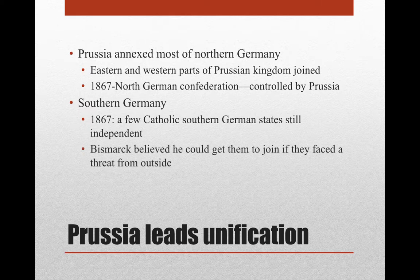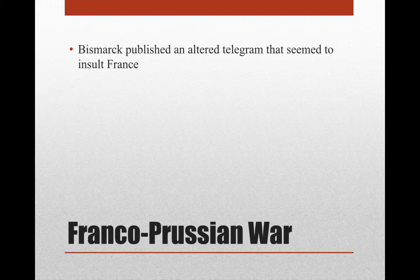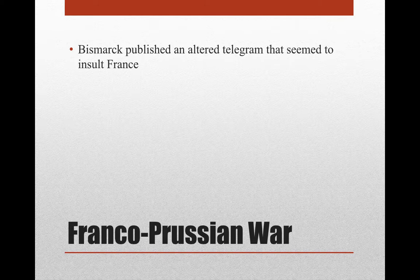Bismarck decided that he could get these southern states to join him if they were threatened by an outside force. So he basically provoked a war with France called the Franco-Prussian War. He published an altered telegram — telegrams being the instantaneous communication of the time period. This was all over a conflict over the Spanish throne. That conflict led to tensions between France and Prussia, so Bismarck took a telegram from Wilhelm, altered it so that it seemed like it insulted France, and this provoked France into declaring war on Prussia in 1870.